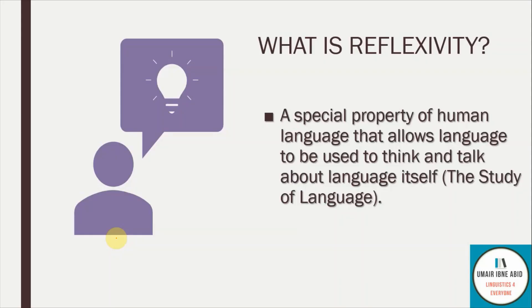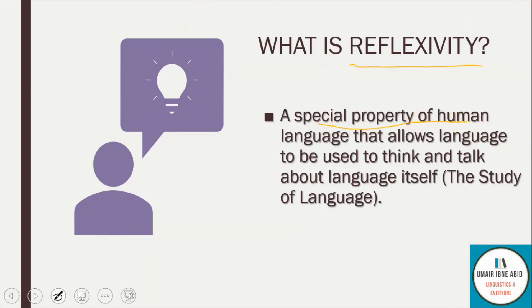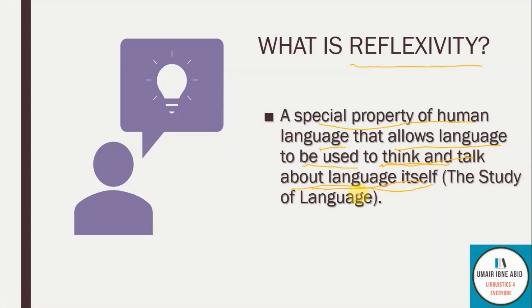What is Reflexivity? As the word suggests, reflexivity means reflection — we reflect something. It is a property of human language that allows language to be used to think and talk about language itself. By using language, we can talk about language itself. So let's look at whether reflexivity is available in animal language or not, and whether this is only a property of human language.